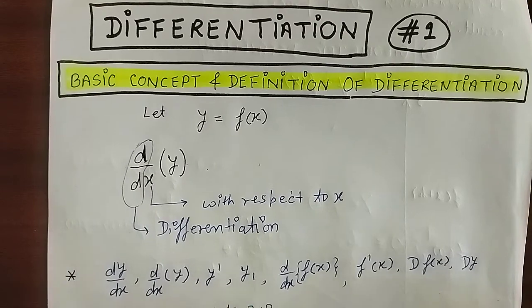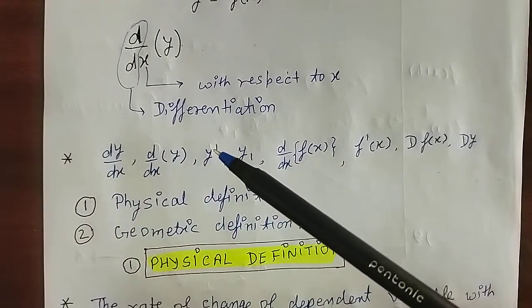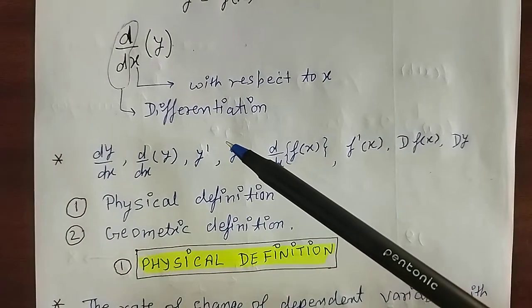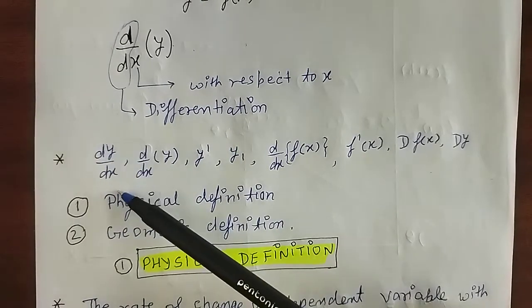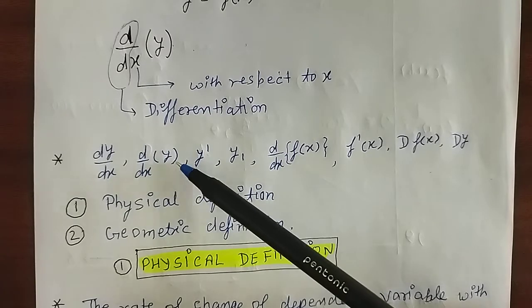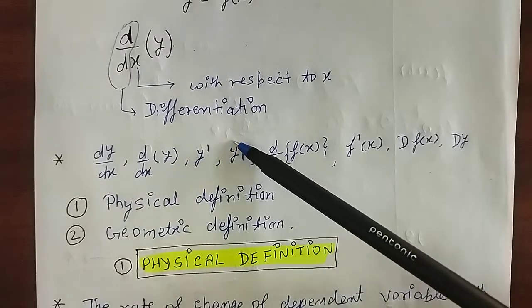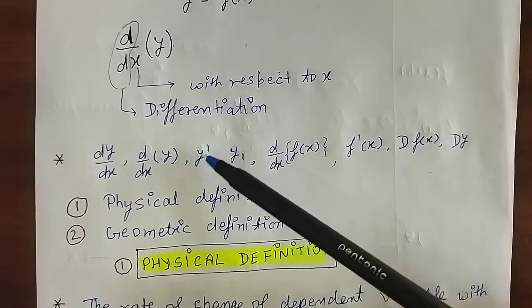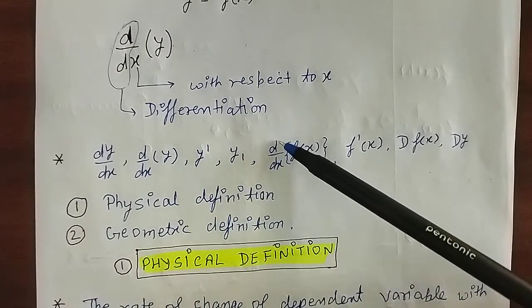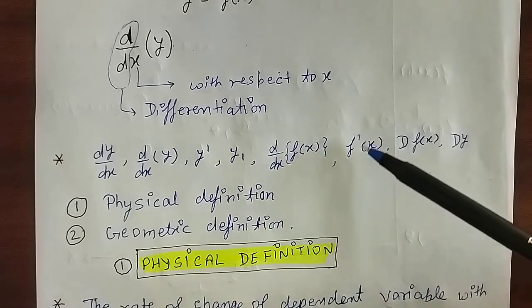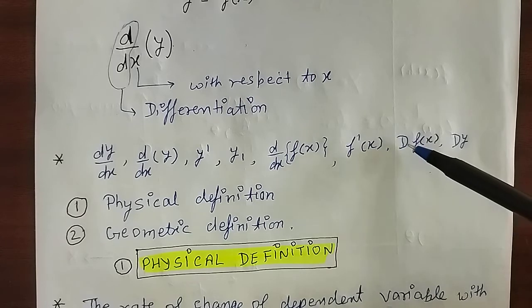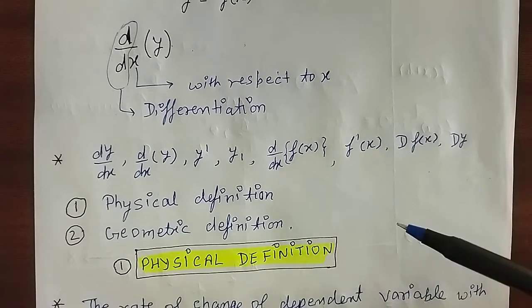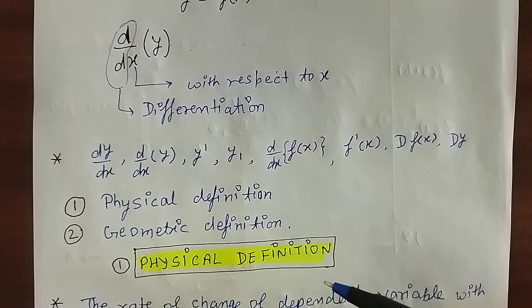So differentiation, which we denote, can be written as: d by dx, d upon dx of y, y prime, d upon dx of f of x, f dash of x, capital D of f of x, or dy. All of these are differentiation symbols.